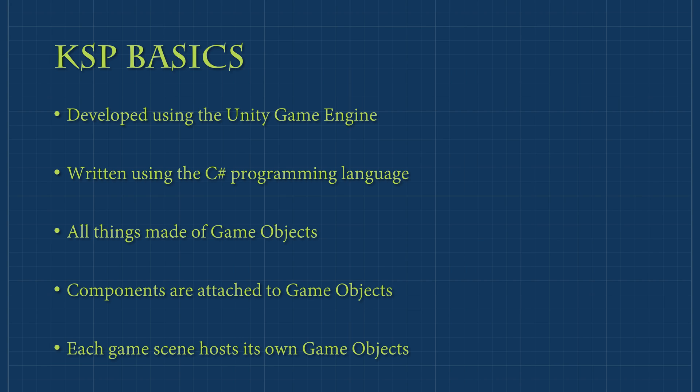First and foremost, KSP is built using the Unity game engine. This means KSP is purely written in the C-sharp language. It also means that everything in the game is either a game object or a component attached to one. A game object is any object that exists in the game world — it can be visible or not, and can interact with other objects through physics or exist in the background. A component is any code attached to a game object, such as a physics collider, a particle system, or a part module.